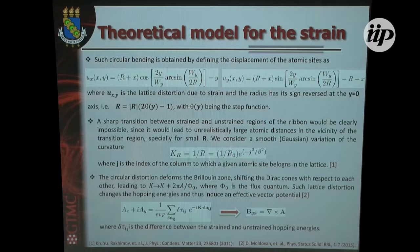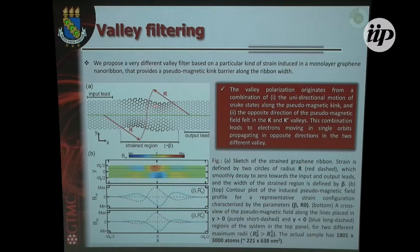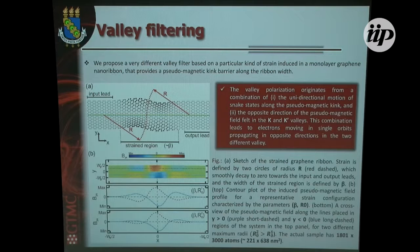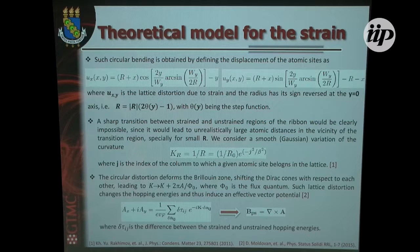This circular deformation deforms the Brillouin zone, shifting the Dirac cones, and as I showed in the theoretical part, straining graphene changes the hopping parameter and thereby the effective vector potential, given by this expression. With this, you can calculate the pseudomagnetic field plotted here — just to show you that you have a kink, where in the top part the pseudomagnetic field points in one direction and in the bottom part it points in the opposite direction.